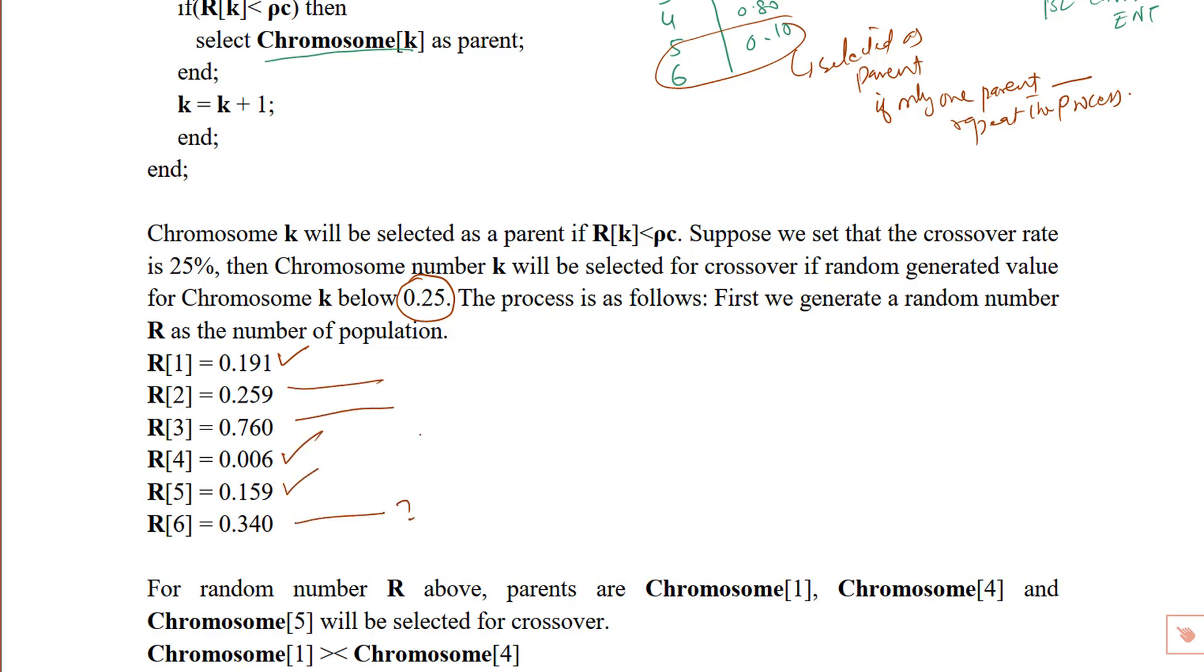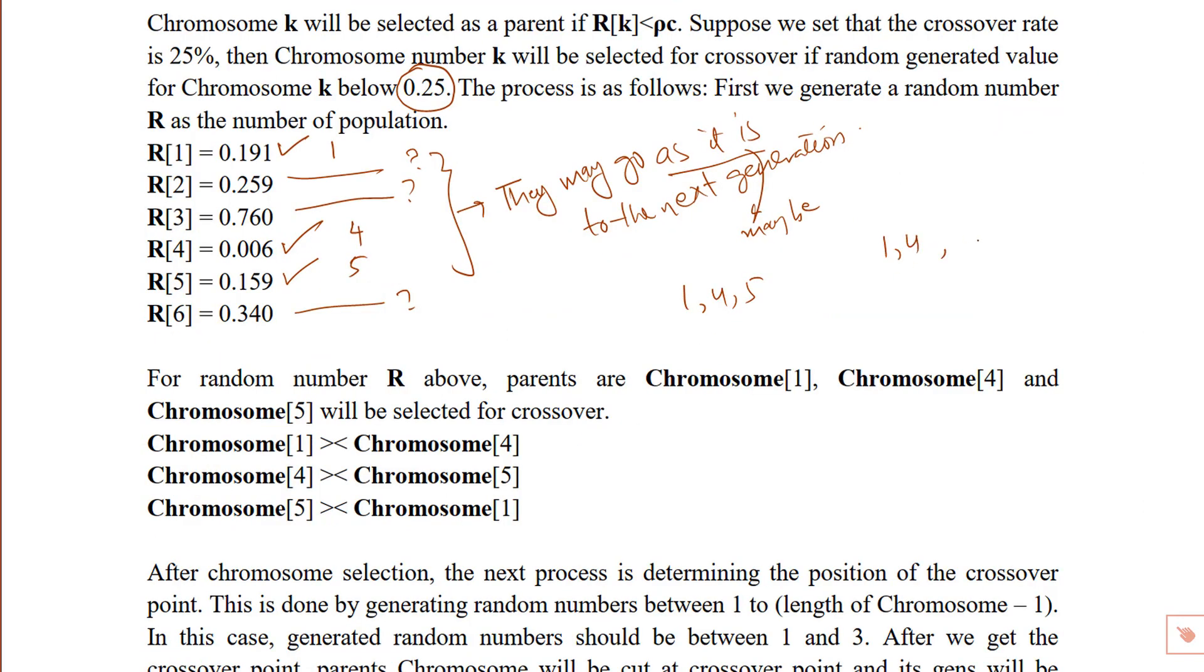Now what happens to 2, 3 and 6? 1, 4 and 5 are selected as parents and 1, 4 is same as 4, 1. So we consider only one combination and hence we have total of three distinct combinations possible. The parents can be 1, 4 and 4, 5 and 1, 5 and each one produces one offspring.